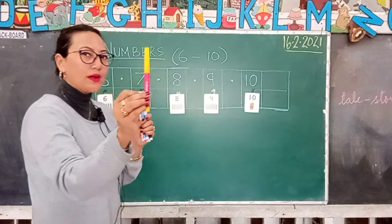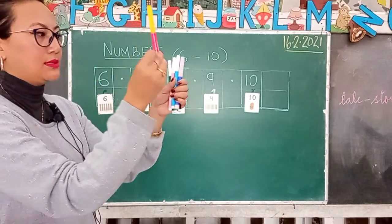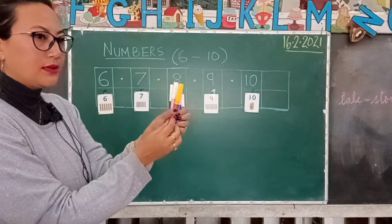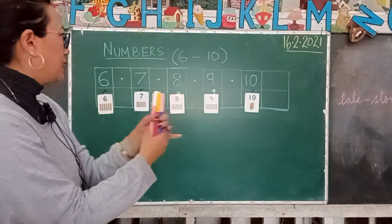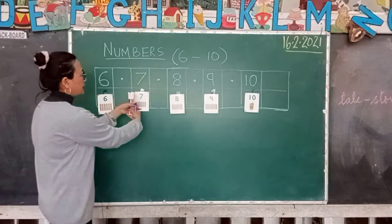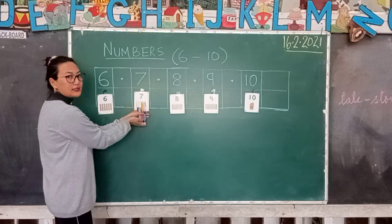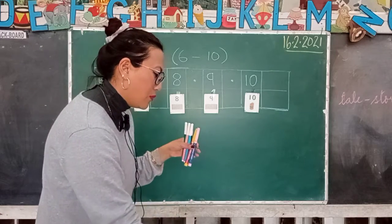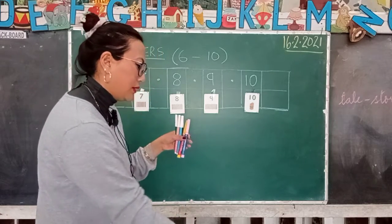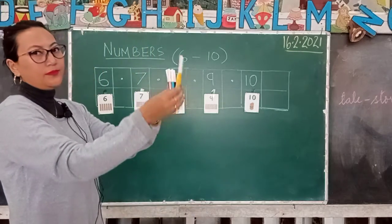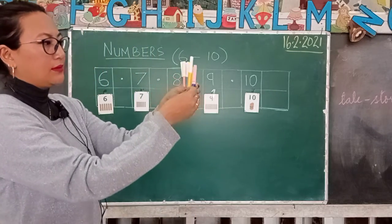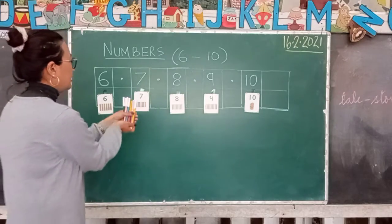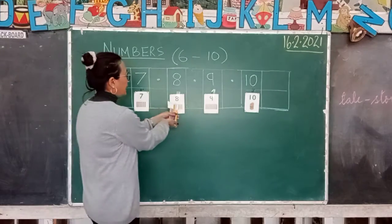Let me add one more color pencil. Six plus one is seven — number 7. Now I want to add one more color pencil — that gives us number 8.